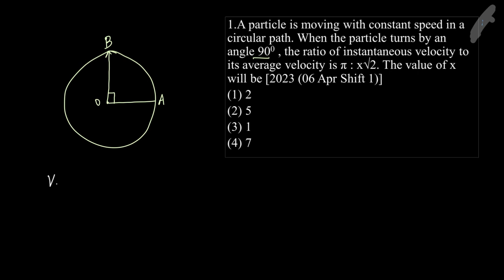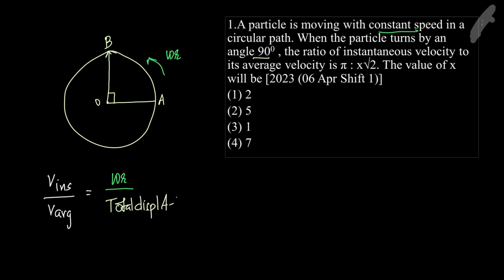Since the object is moving with constant speed, we know that the instantaneous velocity is ωr. Now, average velocity equals total displacement divided by the total time taken to reach B from A. So the ratio becomes ωr divided by (displacement / time).